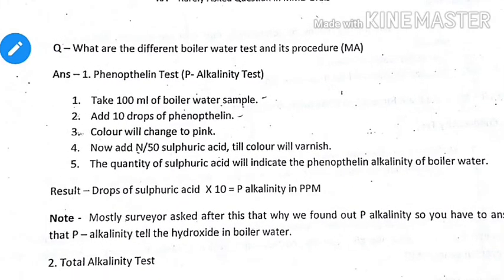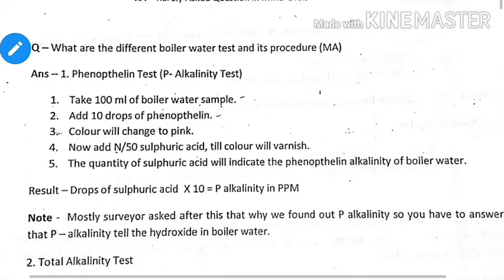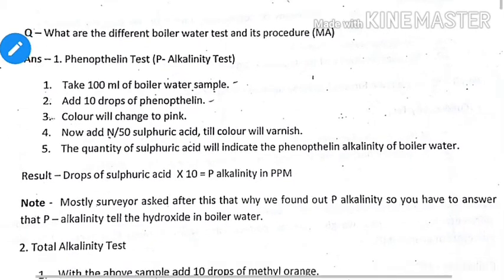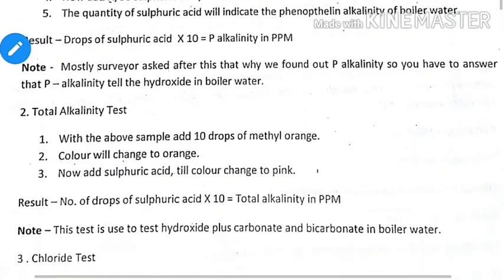To perform the test: take a 1 mL boiler water sample and add 10 drops of phenolphthalein — the color will change to pink. Then add N/50 sulfuric acid until the color vanishes. The quantity of sulfuric acid used indicates the phenolphthalein alkalinity. The result: drops of sulfuric acid equals P-alkalinity in ppm.